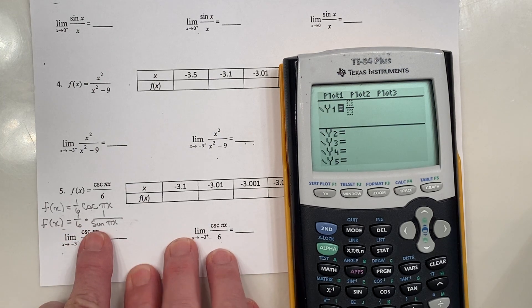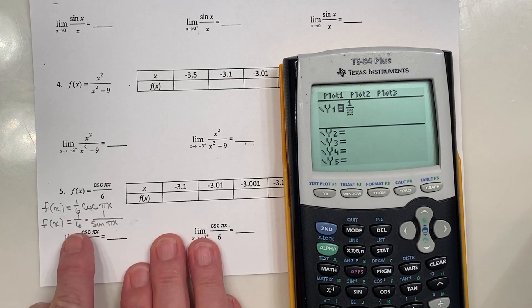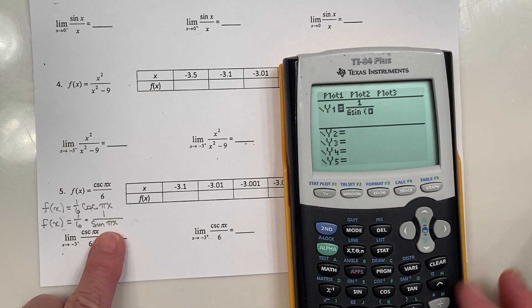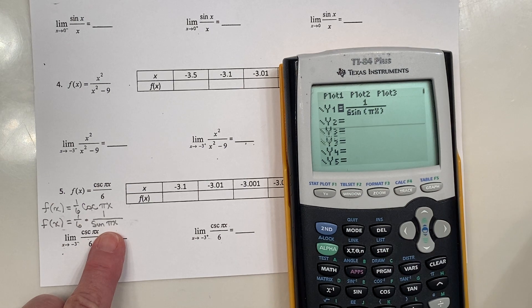I'm going to create a fraction. I'm going to put one on top, and in the denominator, we've got the six times the sine of pi x. Okay, that entry looks good. I am going to, actually,